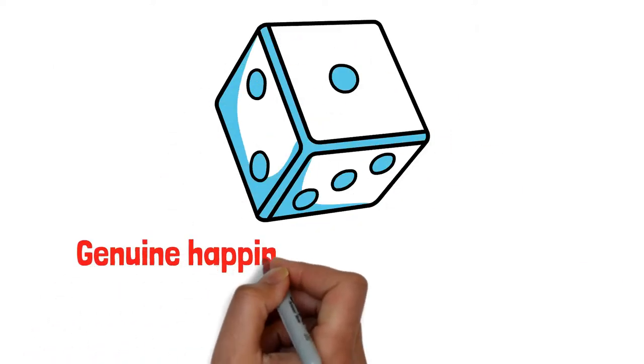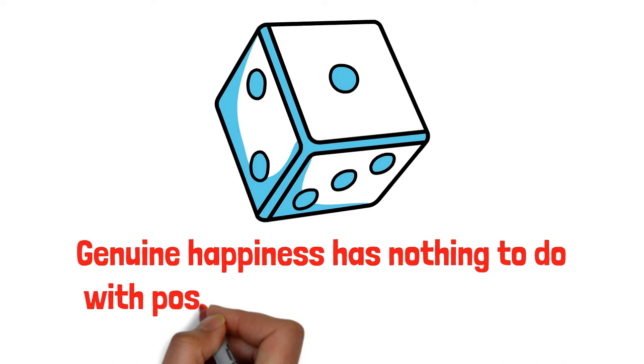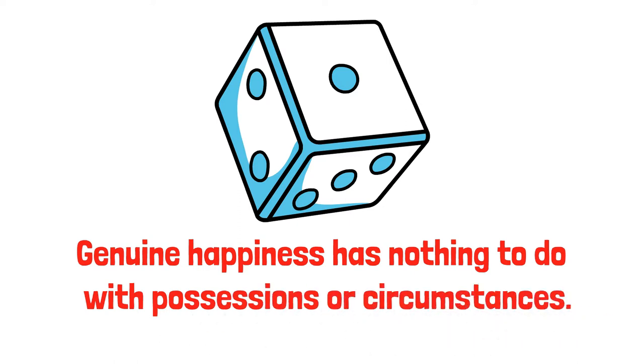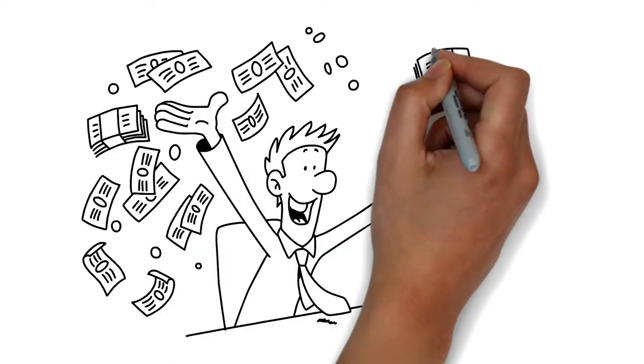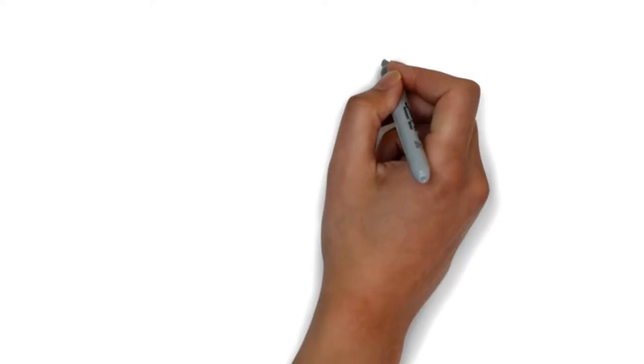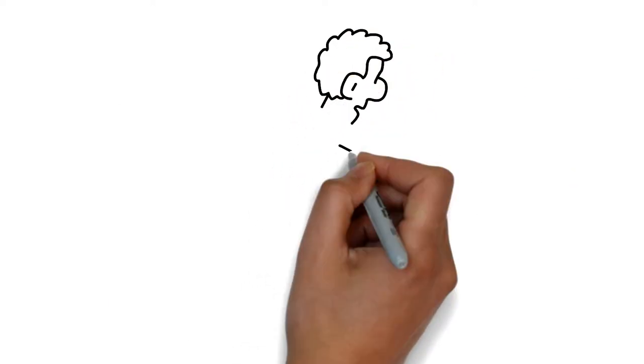Number 1: Genuine happiness has nothing to do with possessions or circumstances. For instance, you would be happier to find out that you had won the lottery rather than being paralyzed, right? But actually, this is not the case in the long run.